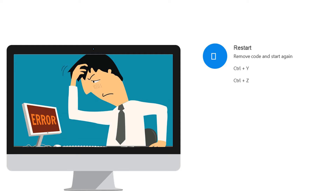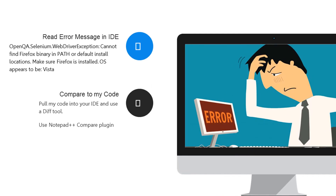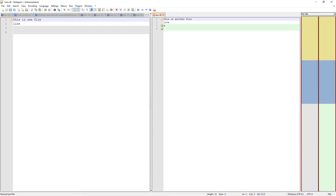If restarting doesn't work either, you can then try to compare the code that you have to the code that I've provided in the course. You can pull up both files in any IDE side by side and use a diff tool. If your IDE doesn't have a diff tool, you can use something like Notepad++ with the Compare plugin to show you the differences. Here's a sample diff in Notepad++ that shows the differences between two files.